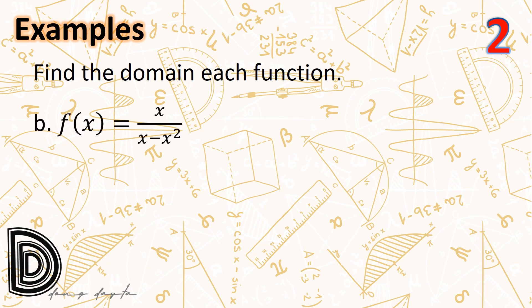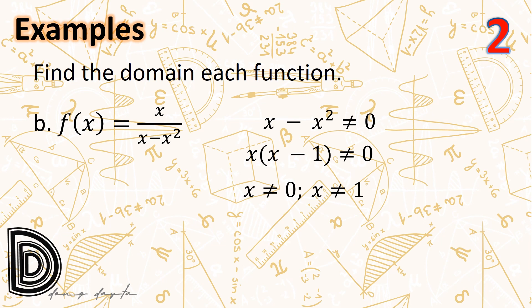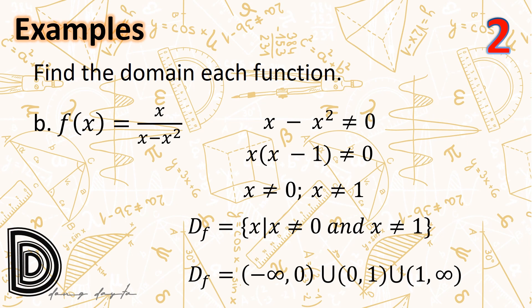Next, f(x) = x/(x - x²). Since f has a denominator, values that make it equal to 0 must be excluded. Setting x - x² ≠ 0 and factoring gives x(x - 1) ≠ 0, so x ≠ 0 or x ≠ 1. Therefore the domain of f is the set of all x such that x ≠ 0 and x ≠ 1, or in interval notation: (-∞, 0) ∪ (0, 1) ∪ (1, +∞).